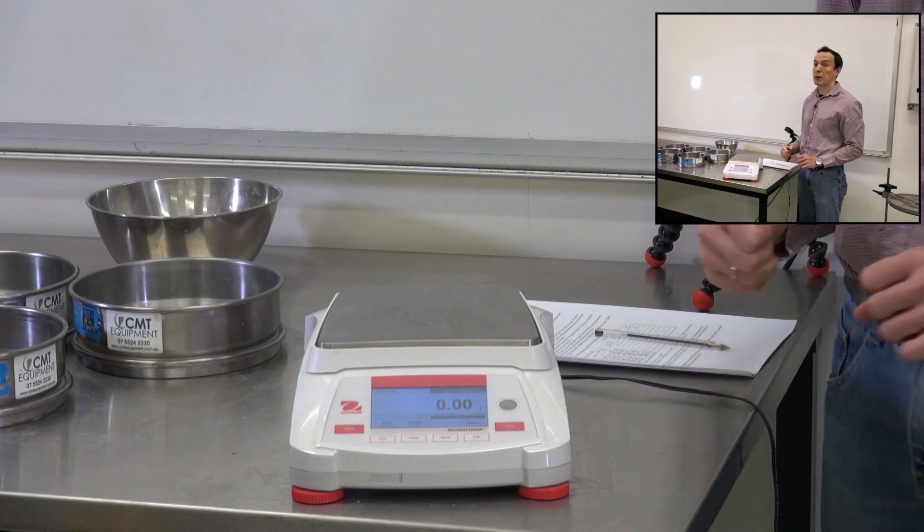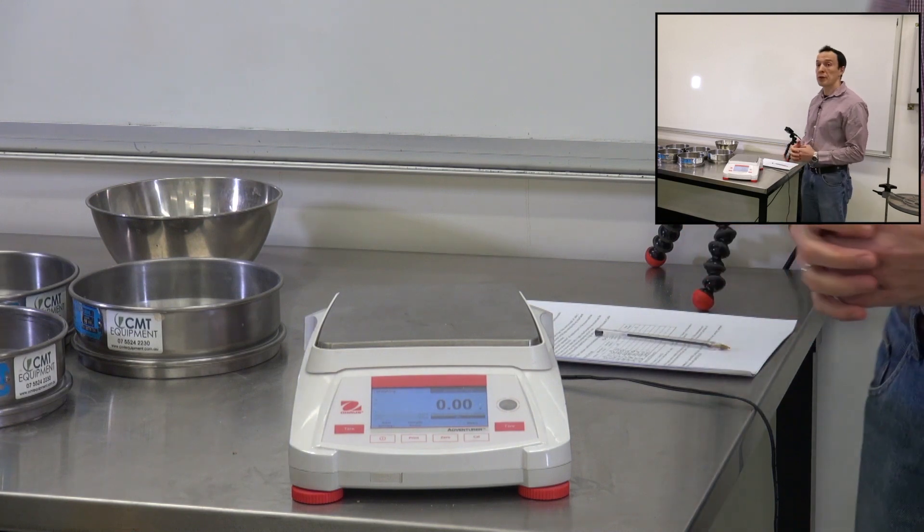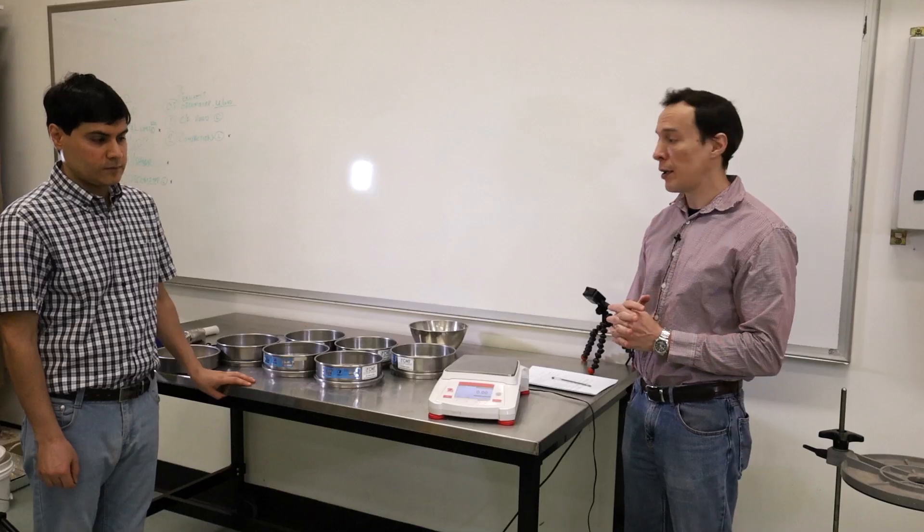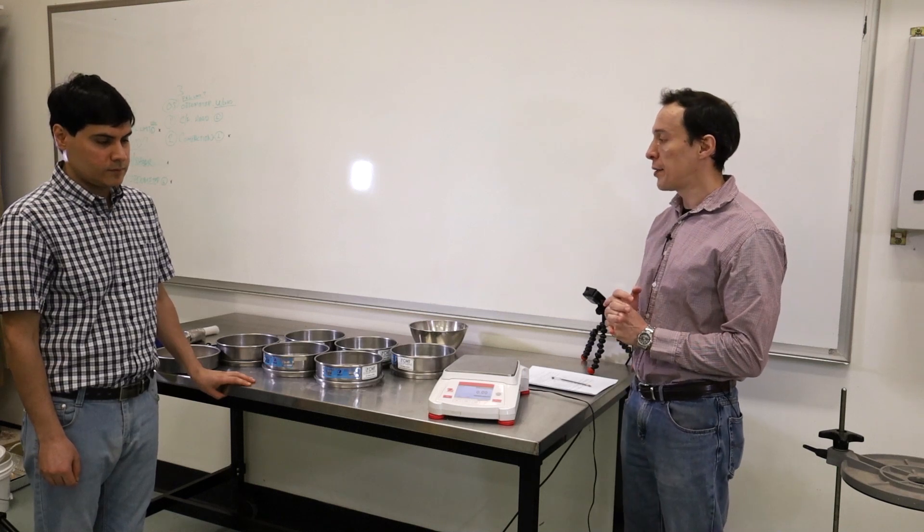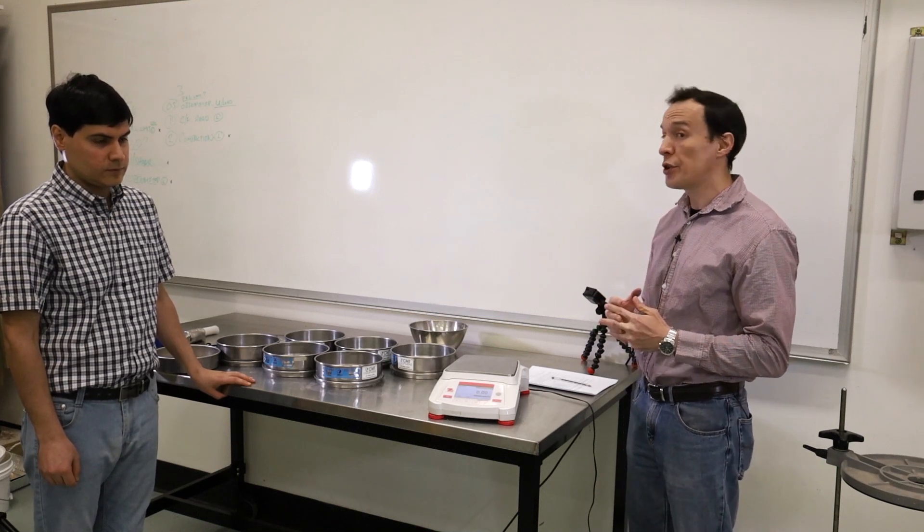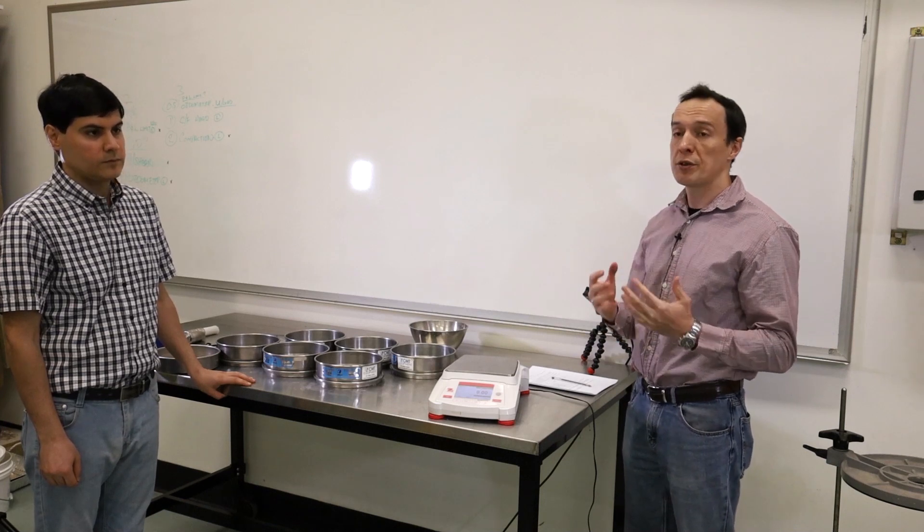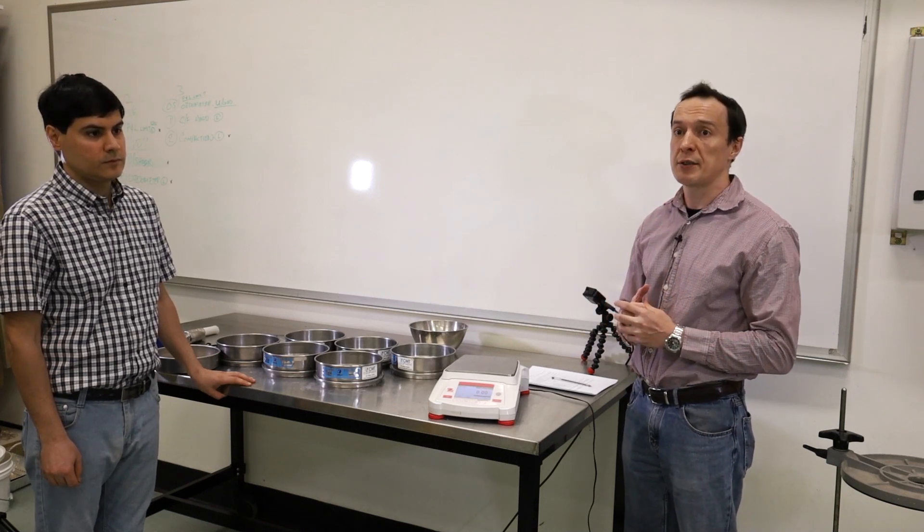That's it for the physical part of the test. Now we need to look at the data and do some simple analysis, calculations. We'll look at the amount of soil in each sieve. And then using this data, we can draw a grain size distribution curve.